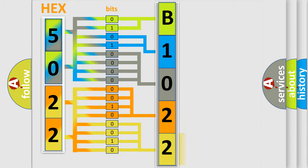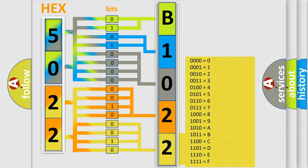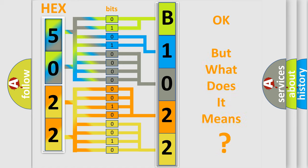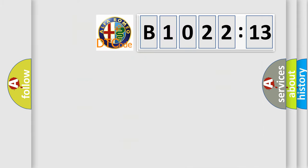A single byte conceals 256 possible combinations. We now know in what way the diagnostic tool translates the received information into a more comprehensible format. The number itself does not make sense to us if we cannot assign information about what it actually expresses.